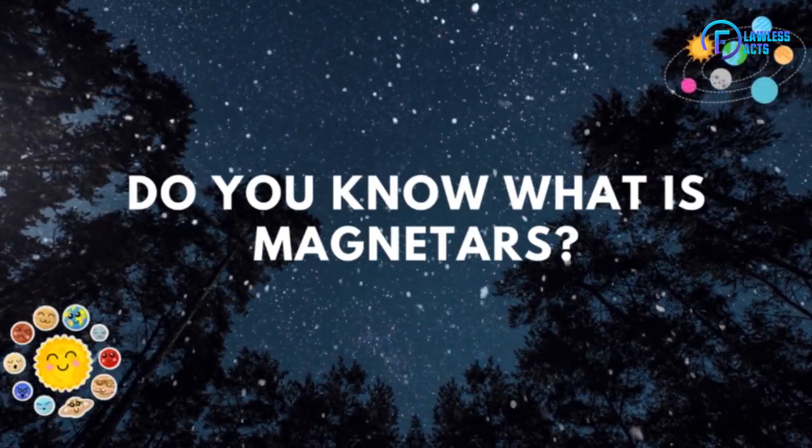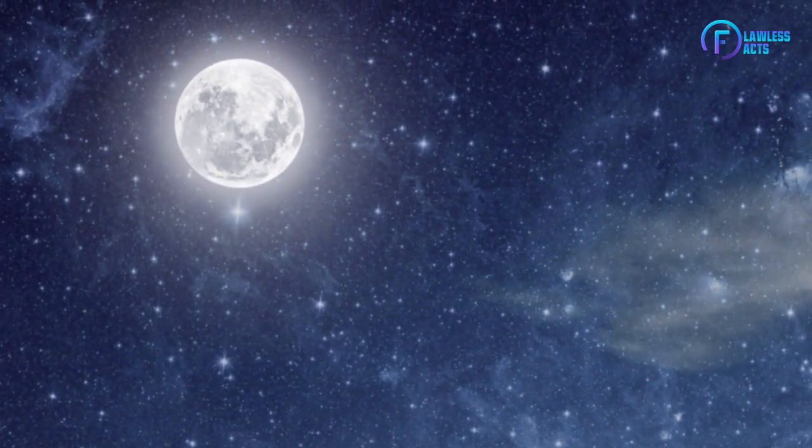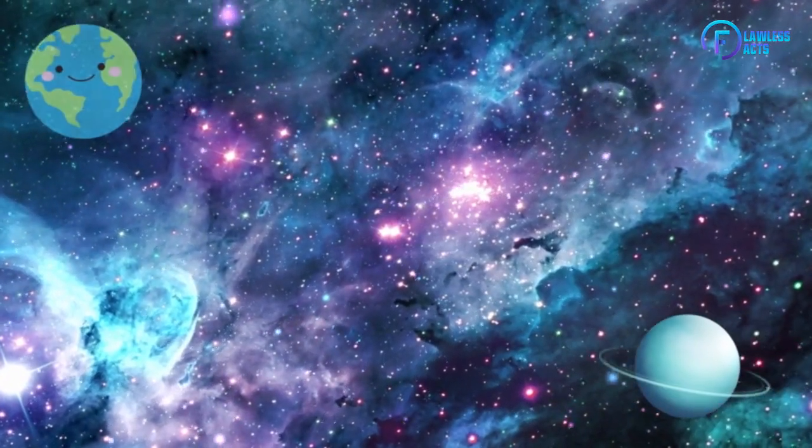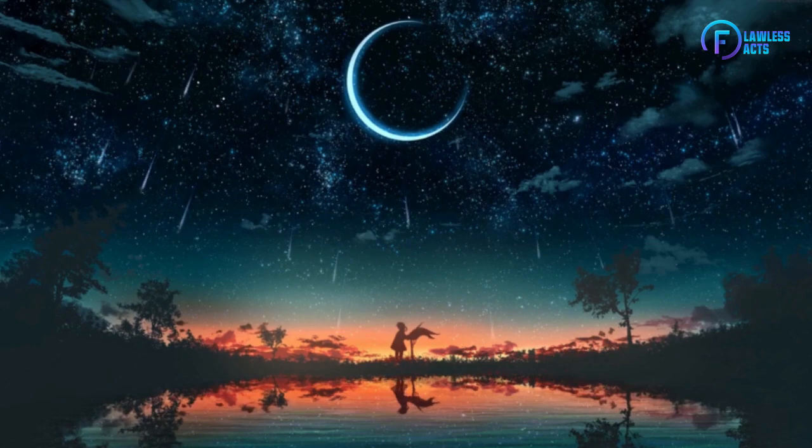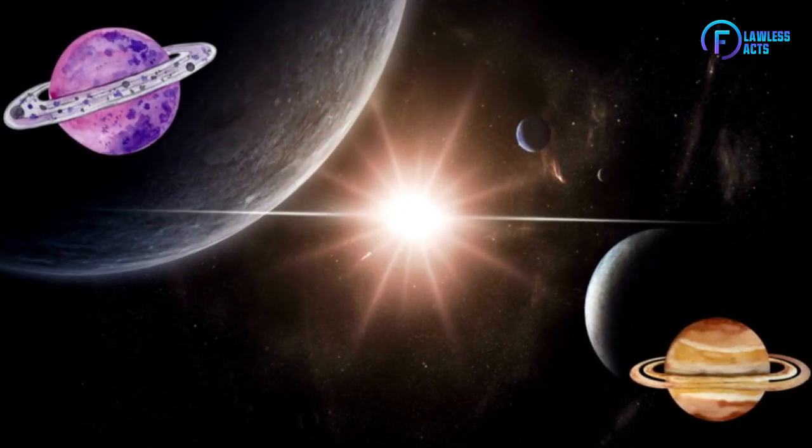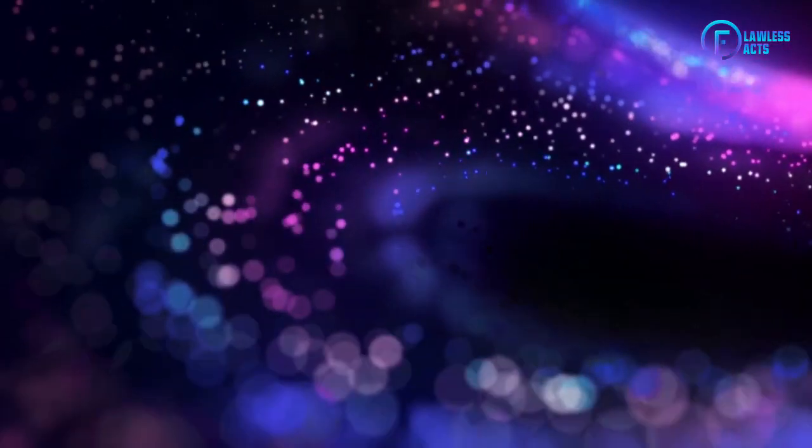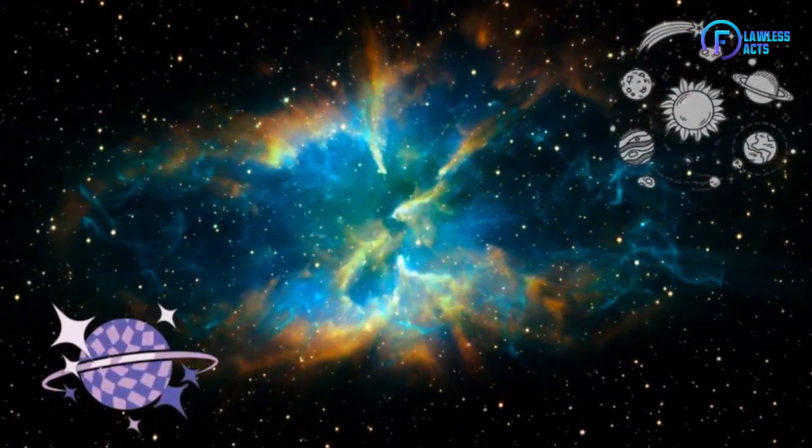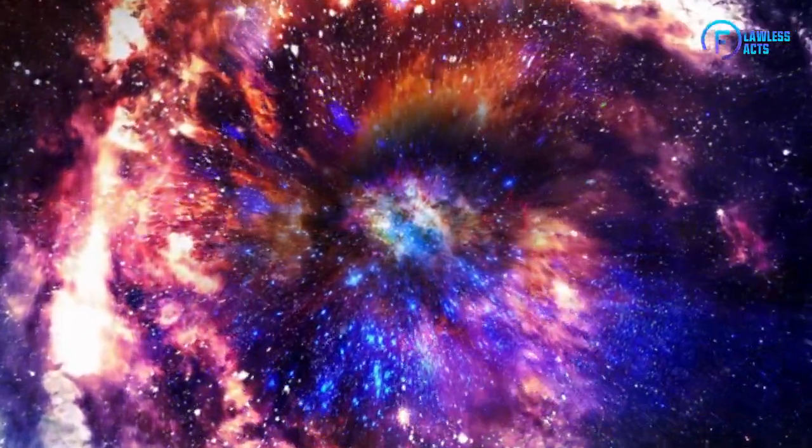Do you know what magnetars are? Magnetars are a type of neutron star that possess an extremely strong magnetic field, about 1000 times stronger than that of a typical neutron star. These objects were first observed in 1998, and since then, only a few dozen have been identified in our galaxy.